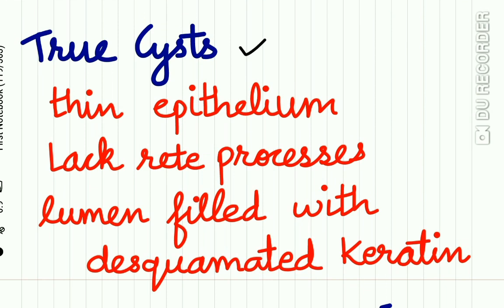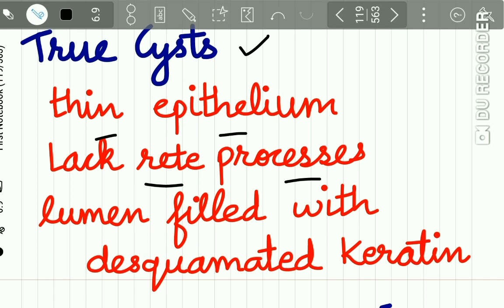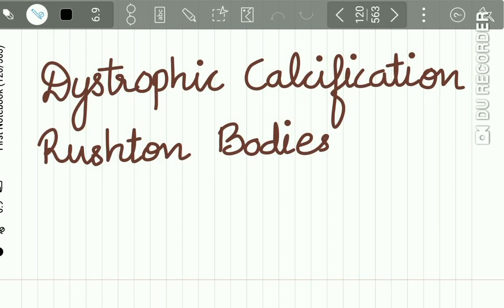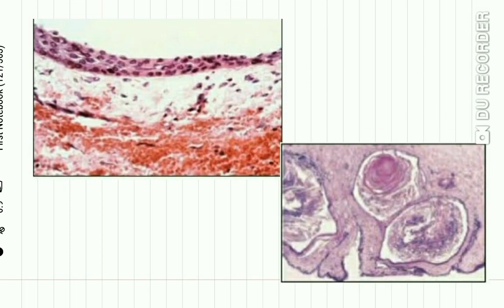Regarding histopathology: these cysts are lined with epithelium that lacks the rete ridges or rete processes. The lumen is filled with desquamated keratin. Sometimes you may also find dystrophic calcification and hyaline bodies in the gingival cysts of the newborn. Here you can see the histopathologic picture of the gingival cyst of newborn.